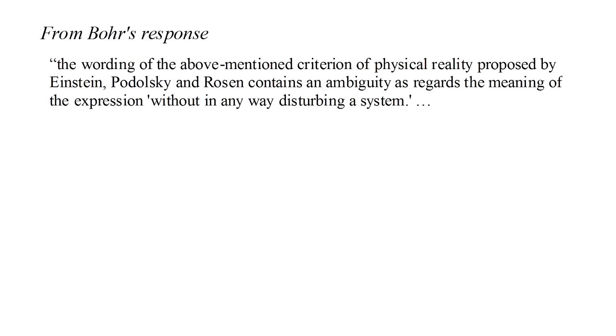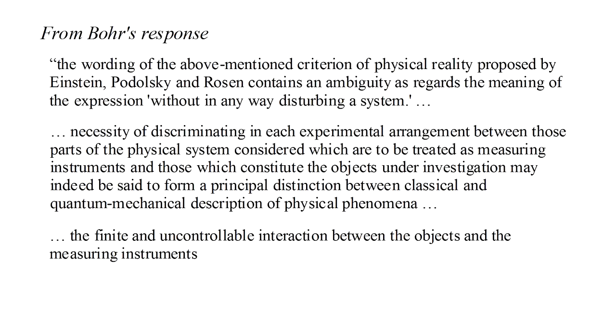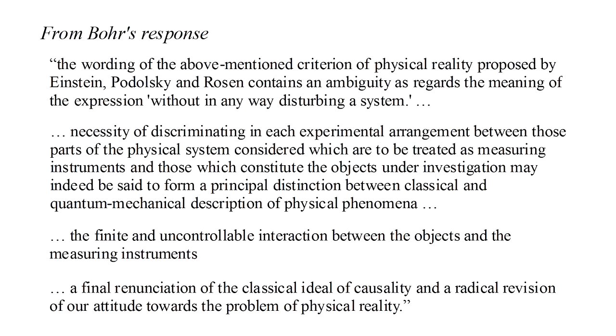The gist of it is that the necessity of discriminating in each experimental arrangement between those parts of the physical system considered which are to be treated as measuring instruments and those which constitute the objects under investigation may indeed be said to form a principal distinction between classical and quantum mechanical description of physical phenomena. Bohr emphasized the finite and uncontrollable interaction between the objects and the measuring instruments. As we've seen throughout this series, in quantum mechanics we've reached a limit in which the very act of measurement can change the properties of the object being measured.